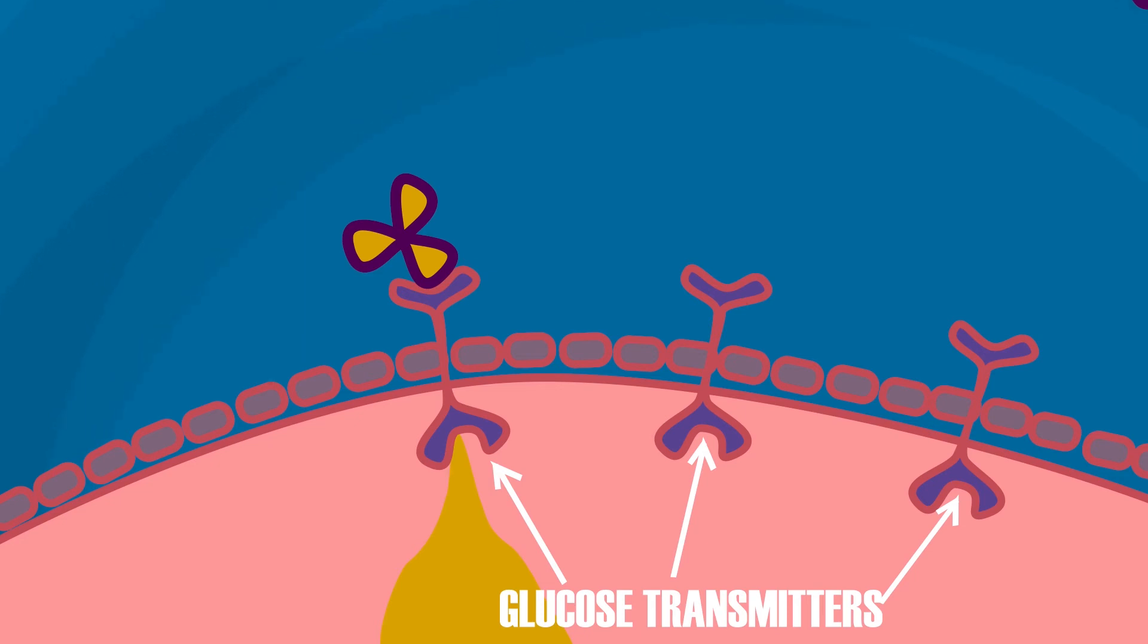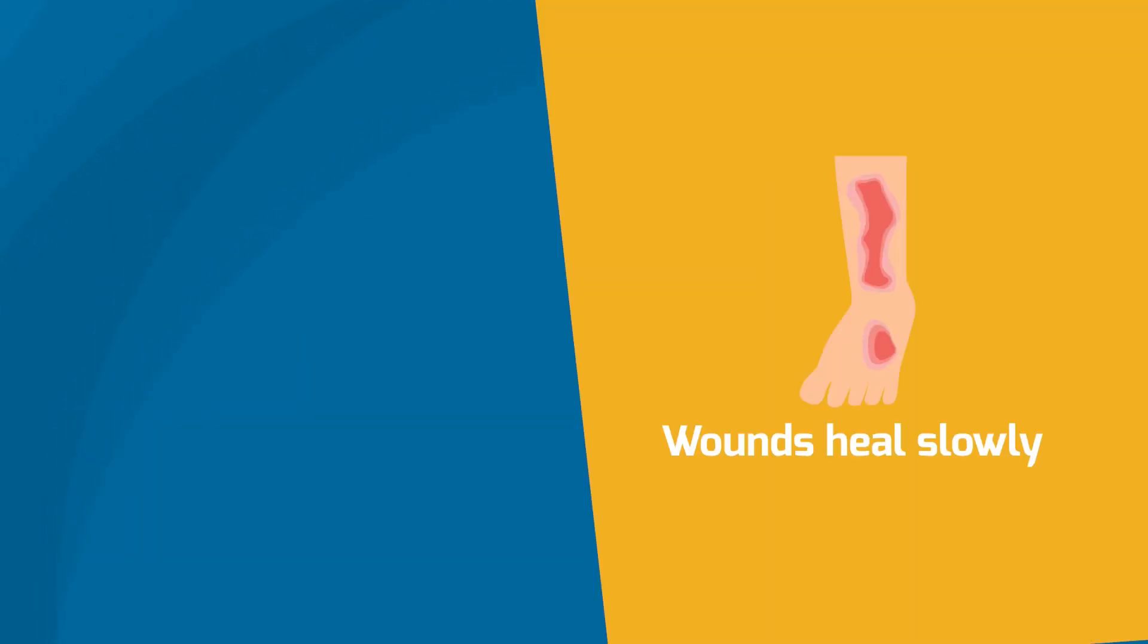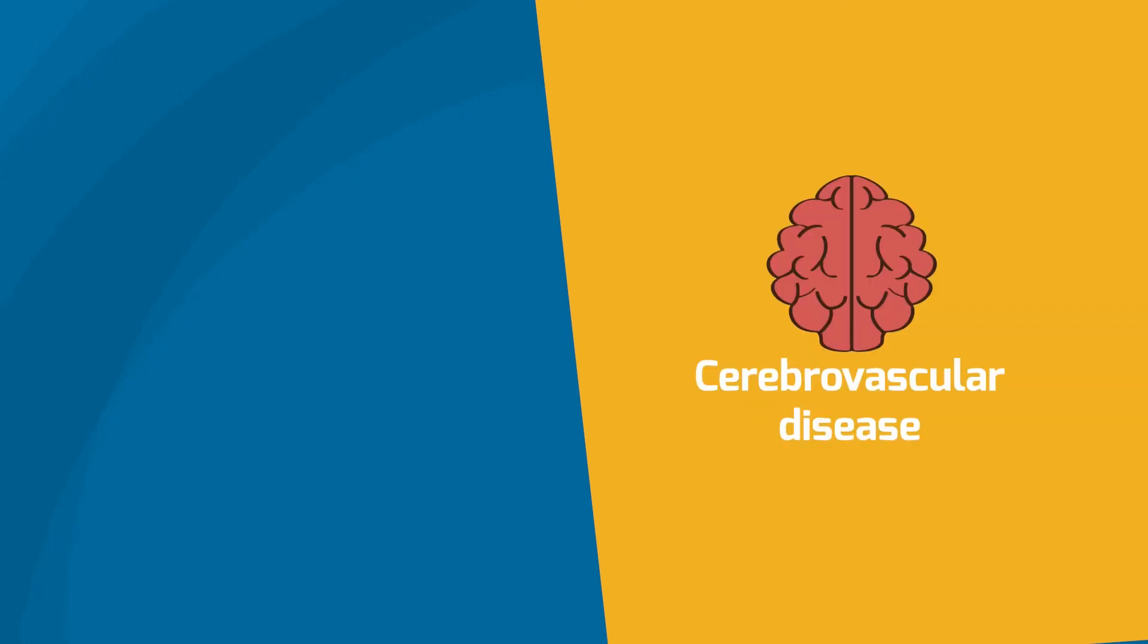The cells can be starved for energy. Over time, high blood sugar levels can damage your eyes, kidneys, nerves, or heart.